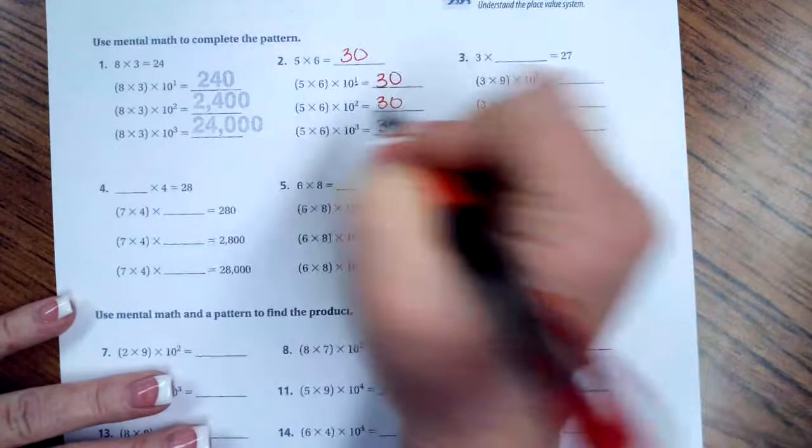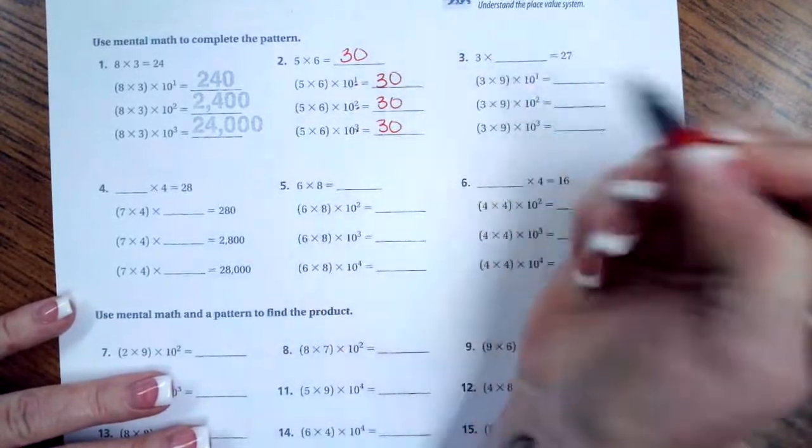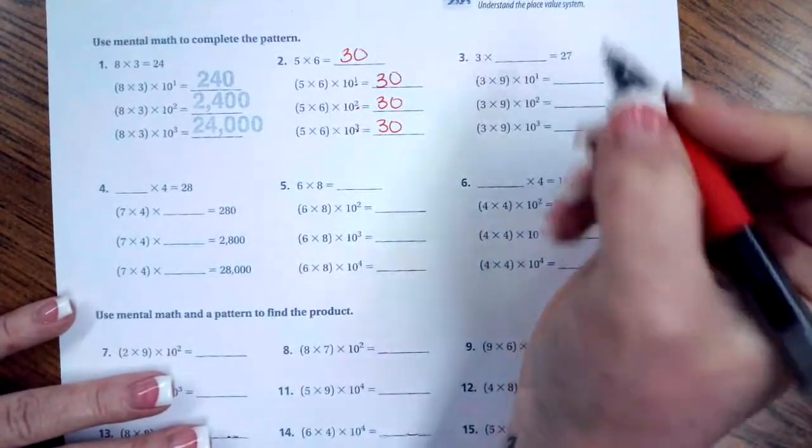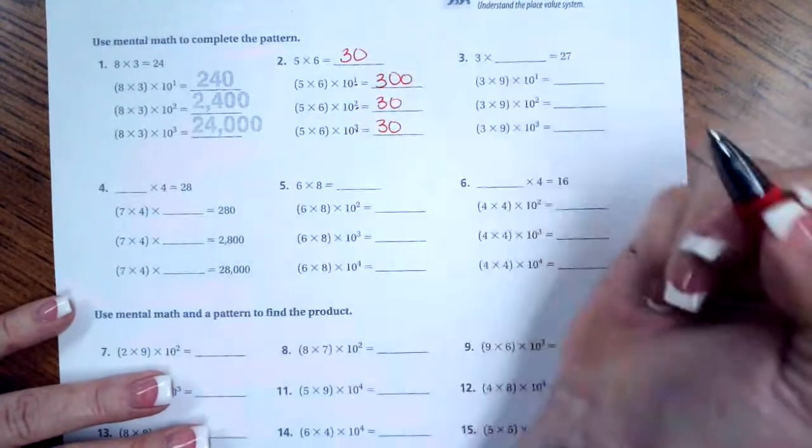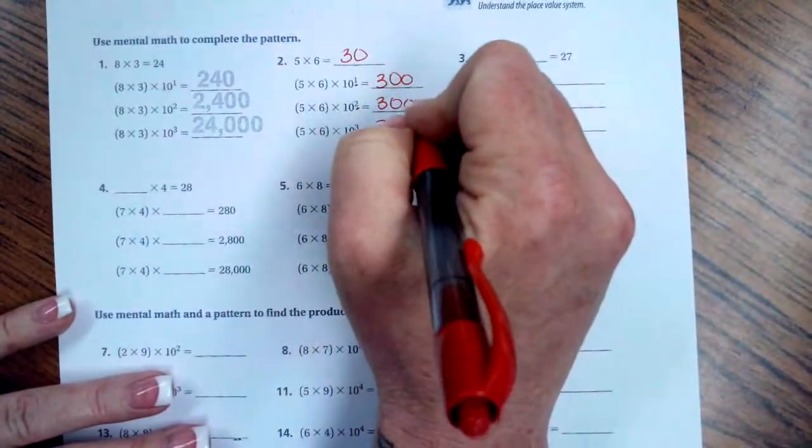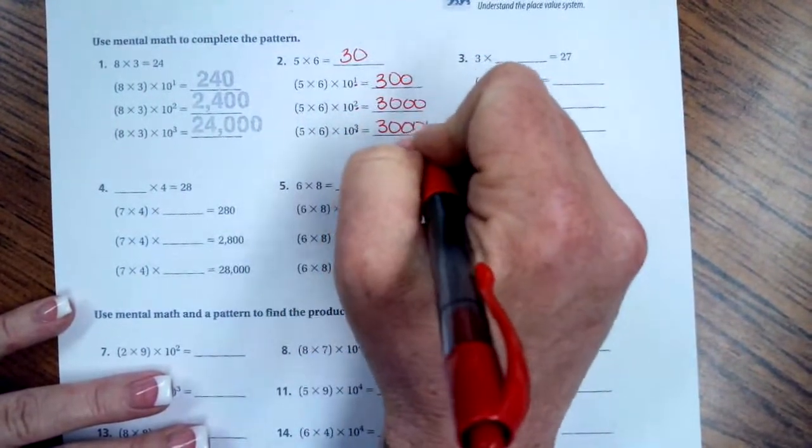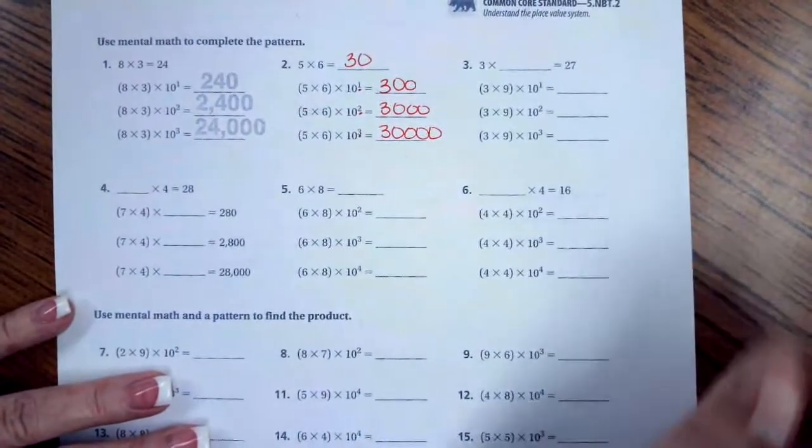The exponents are going to tell us how many 0's we have to add. So, this one we're going to add 1 0. This one we're going to add 2. This one we're going to add 3. Not bad.